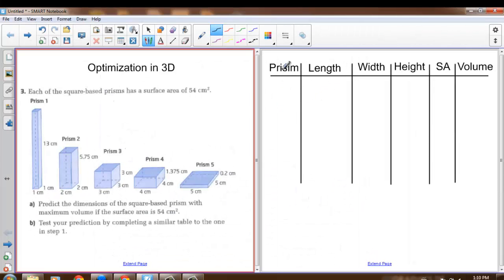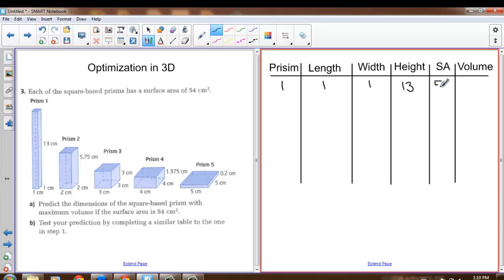So we'll fill in a table with our prisms, looking at the length, width, and height. Prism number 1 has a base length of 1, a base width of 1, and a height of 13 centimeters. And like the question says, it has a surface area of 54 centimeters squared, and a volume of 1 times 1 times 13, length times width times height, of 13 centimeters cubed. So considering how much surface area there is, there's not a whole lot of volume.